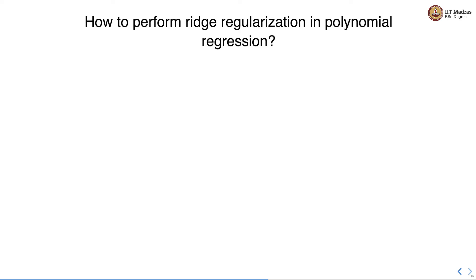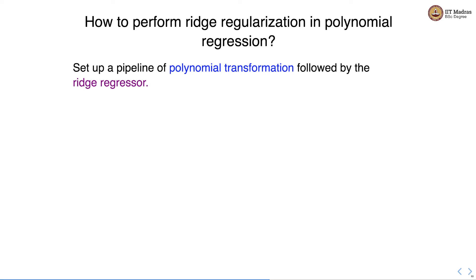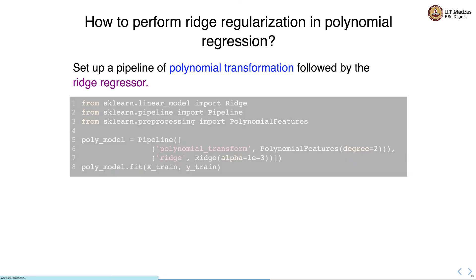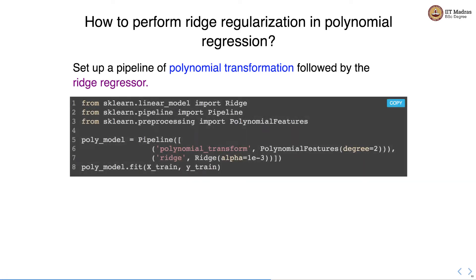Let's see how to perform Ridge regularization in polynomial regression. We set up a pipeline of polynomial transformation followed by the Ridge regressor. The pipeline includes a PolynomialFeatures object with degree equal to 2, followed by Ridge with the specified alpha value. We then call the fit function on the pipeline object with the feature matrix and labels as arguments, performing polynomial transformation first and then Ridge regression for learning the model parameters.